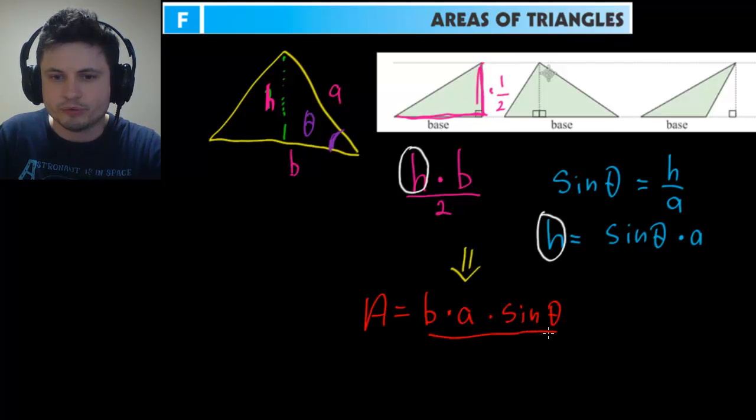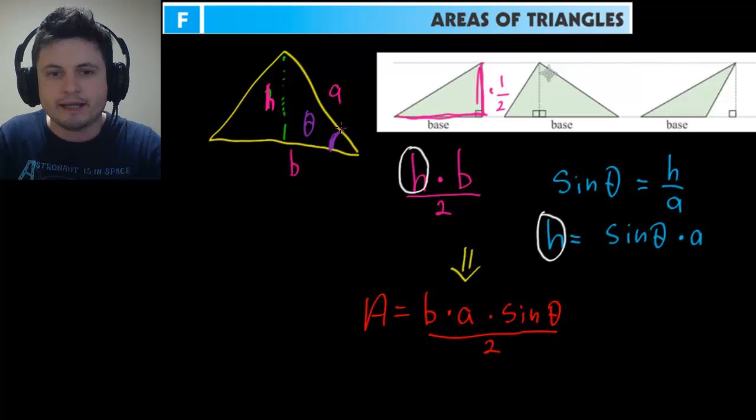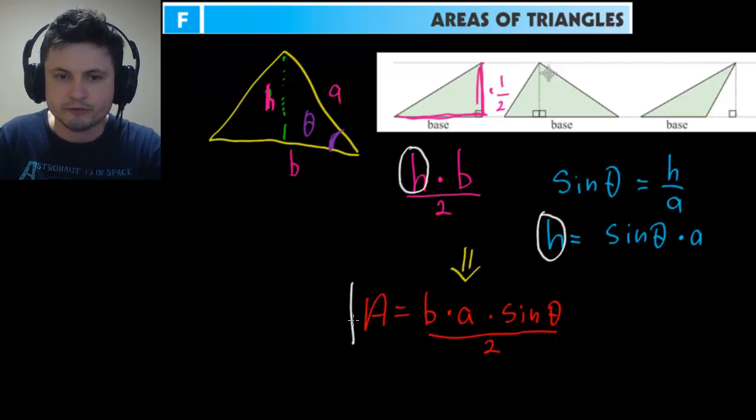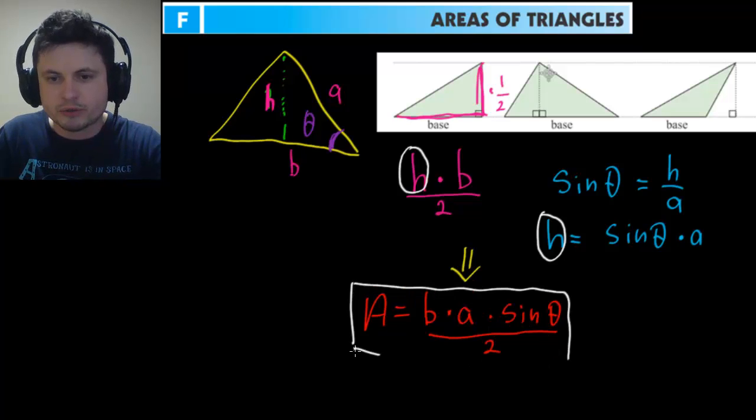Divided by two. So essentially you can actually find an area of any triangle as long as you have the angle between two sides and you have those two sides as well. And this is actually the formula that we're looking for in this particular sub-chapter.